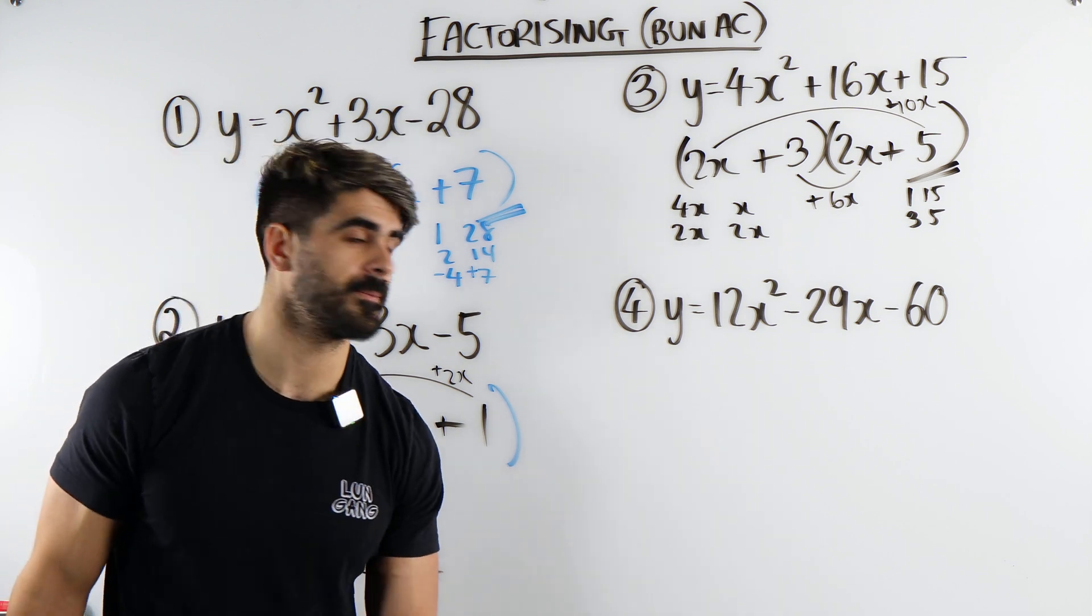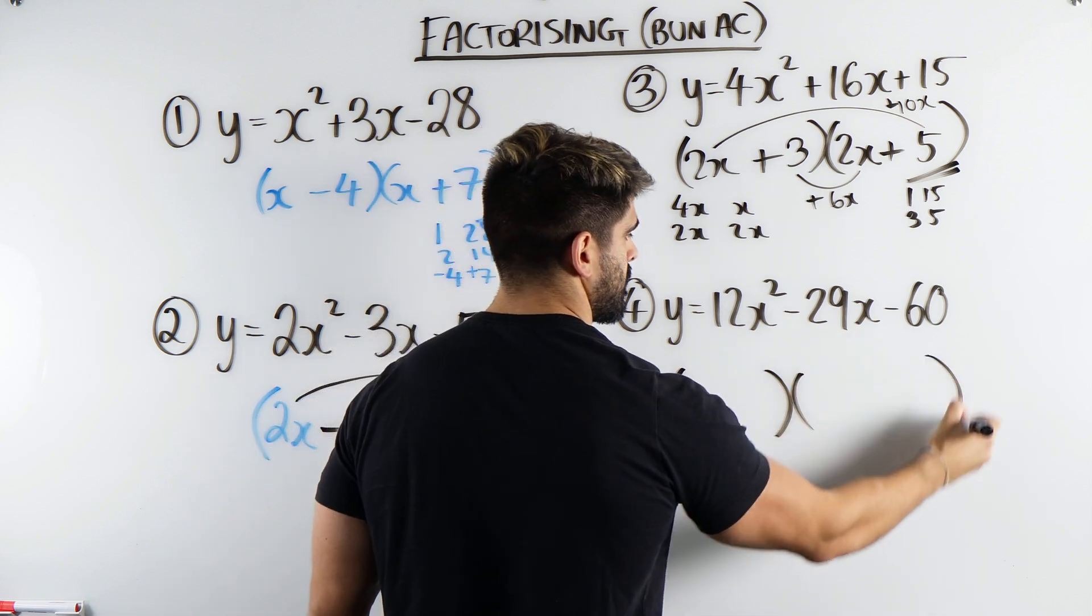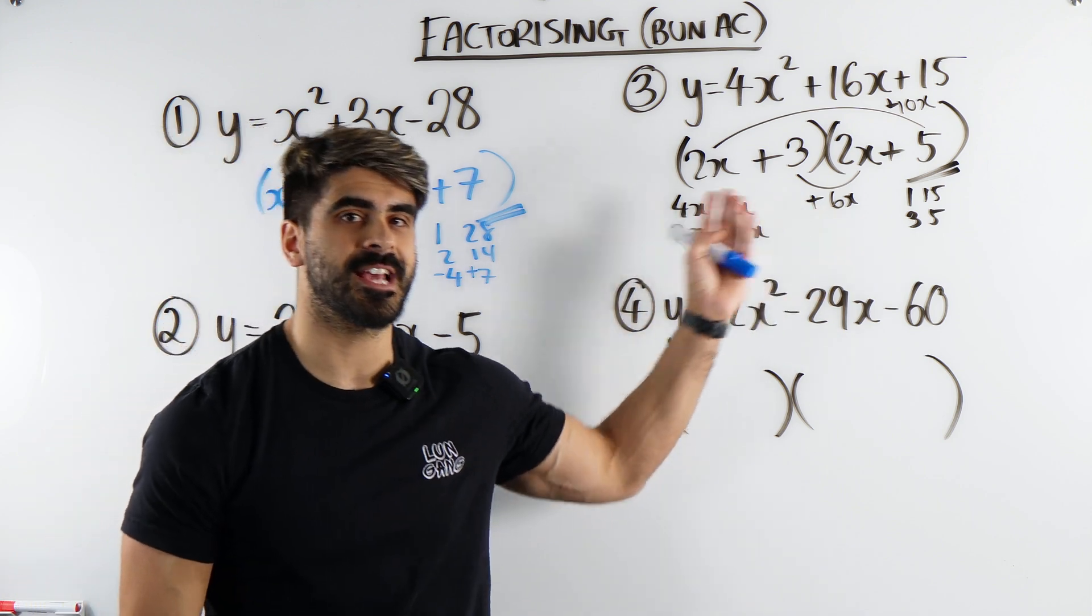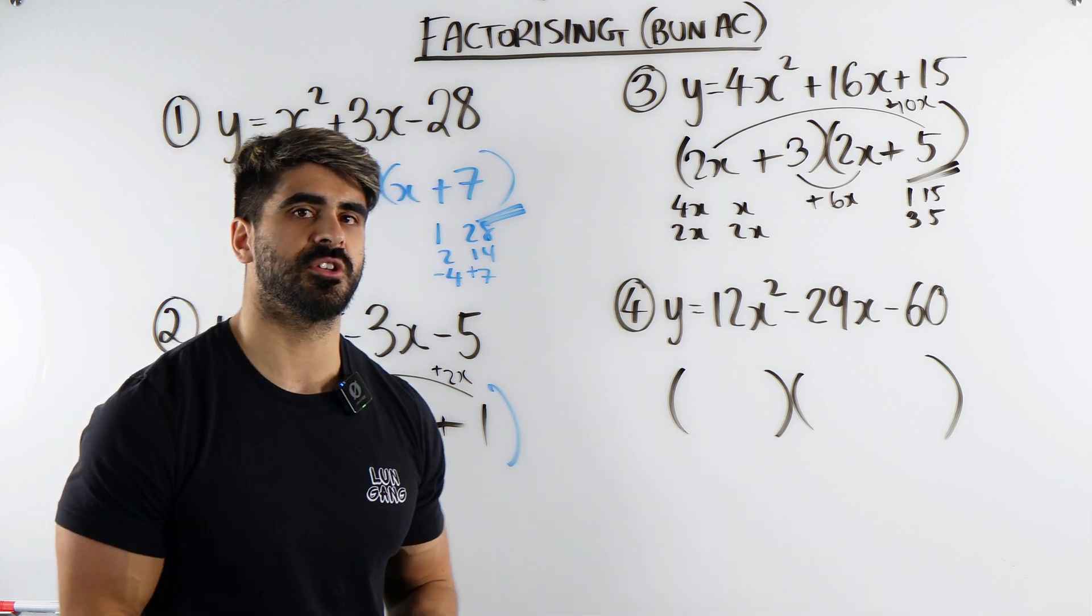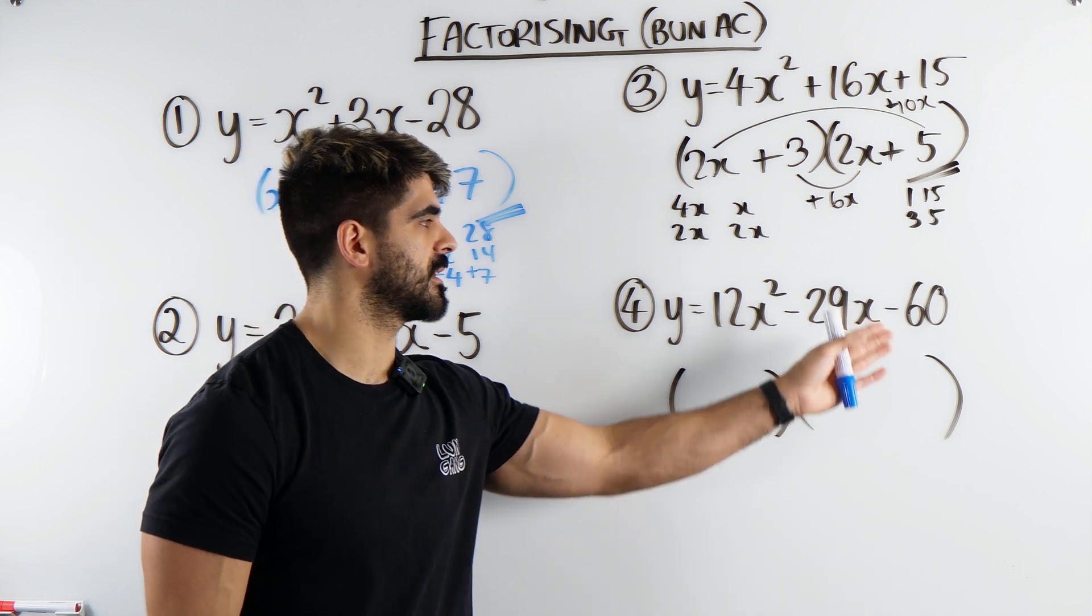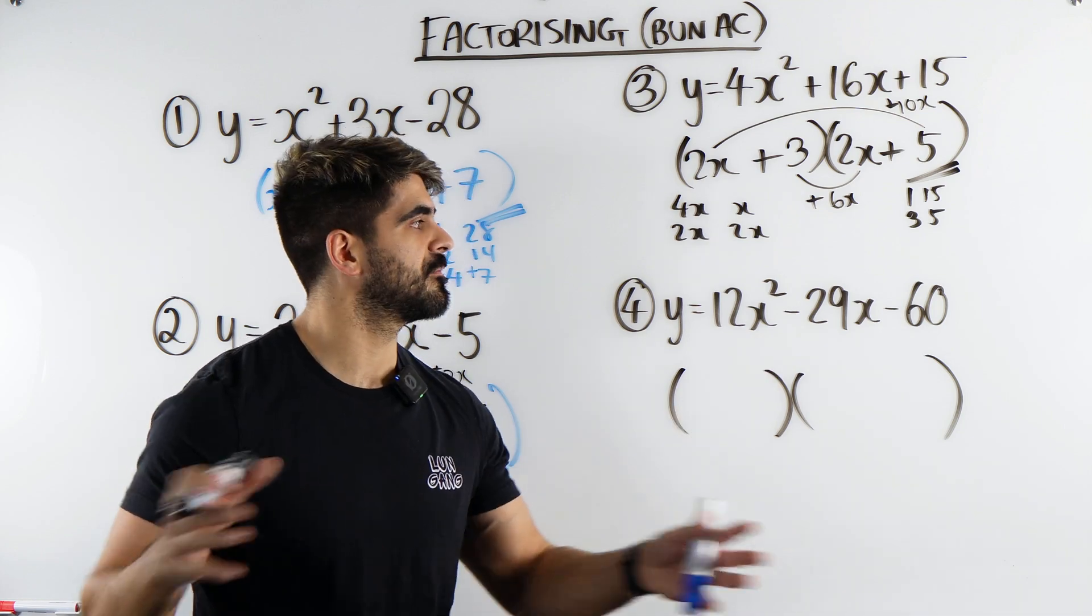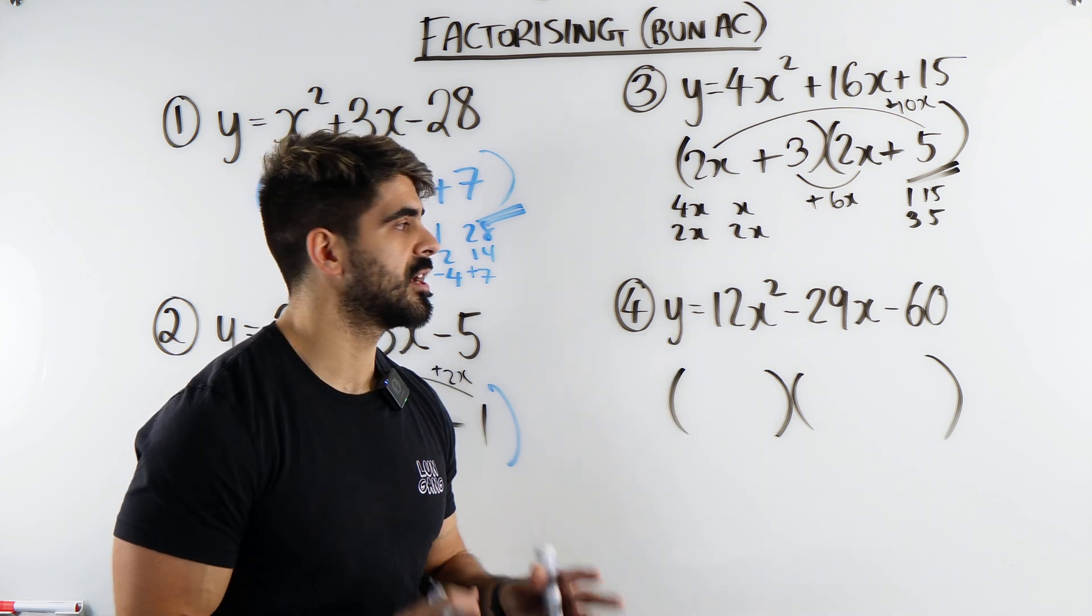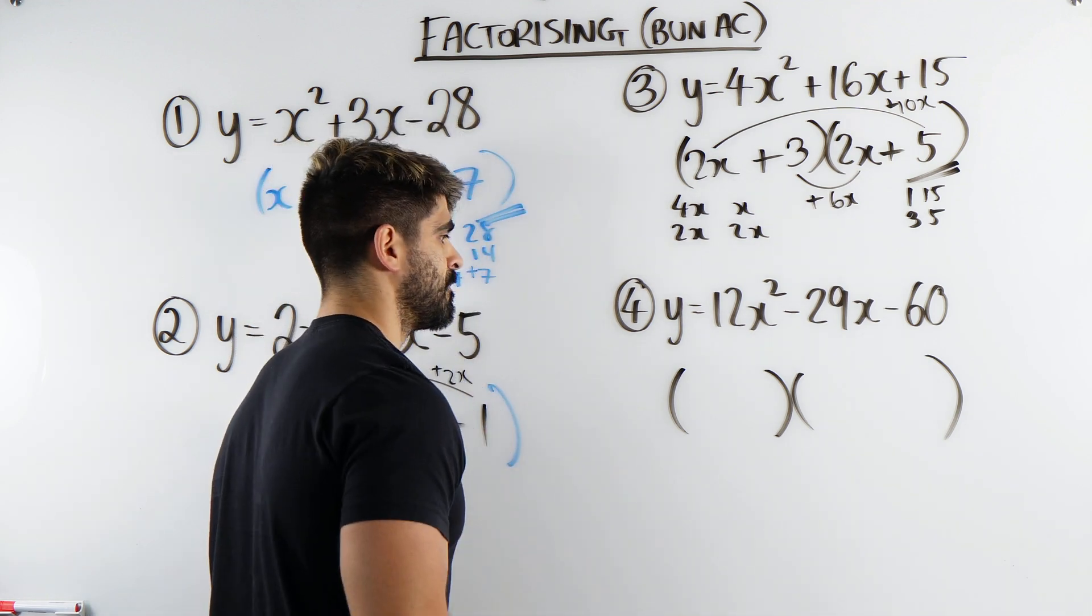Now we get to the big boy. If you can't do this, it's all good. I would pause the video, try and employ these tactics and see if you get it. It just takes a bit of practice, but then as you get better and better, you're going to be super quick. The AC method, ain't nobody got time for that. 12 times 60, then you have to break it down into 29. Then you have to split the middle term. Then you have to factorize, then factorize again. By the time you've done all that, someone who's experienced at doing this will have been done in 1 9th of the time.